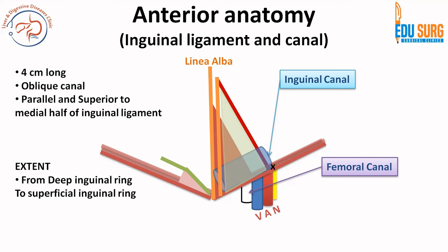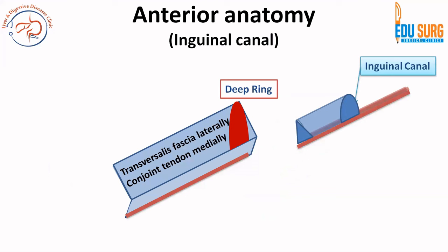When we talk about the inguinal canal at its most basic, it is a 4 cm long oblique canal which is parallel and superior to the medial half of the inguinal ligament. The deep inguinal ring surface landmark is the midpoint of the inguinal ligament, so the inguinal canal will be over the medial half of the inguinal ligament. Its extent is from the deep inguinal ring to the superficial inguinal ring. Structures enter the inguinal canal through the deep inguinal ring, which pierces the posterior wall of the canal.